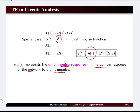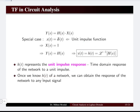When we apply the input δ(t) and determine the output y(t), which equals h(t), that is known as the unit impulse response of the system. Once we know h(t), the unit impulse response of any network, we can obtain the response of the network to any other input signal. Whatever the input signal may be, we can easily determine it given the h(t) of the network.